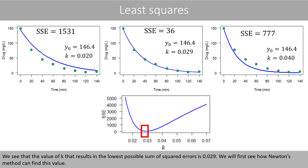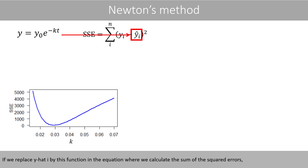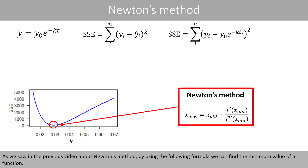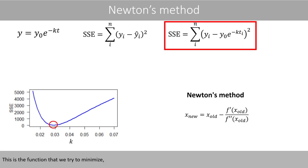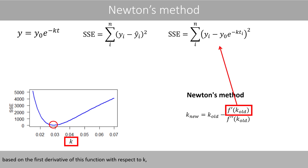We'll first see how Newton's method can find this value. This is the nonlinear function that we try to fit to the data. If we replace y-hat with this function in the SSE equation, we get the following equation. As we saw in the video about Newton's method, by using the updating formula we can find the minimum value of the function. We will therefore update the value of k in every iteration based on the first and second derivatives of the SSE function with respect to k.